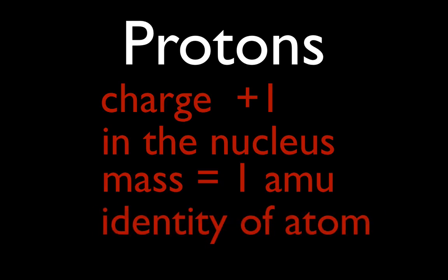And protons, their importance is that they identify what kind of atom we have. All right? The number of protons in the nucleus tells you what kind of atom you have. That is what we call the atomic number. Hydrogen has one proton in its nucleus. All atoms with one proton are hydrogen. Okay? So that tells you the identity of an atom. That is what we call the atomic number.